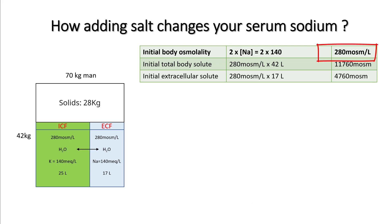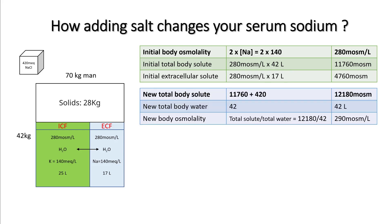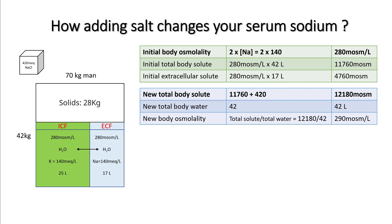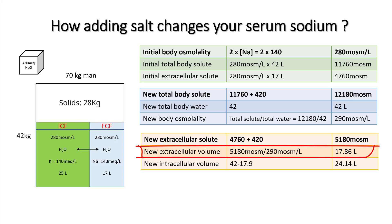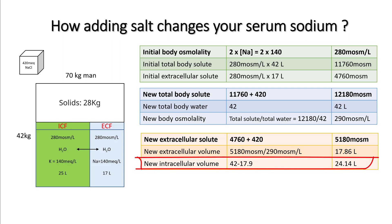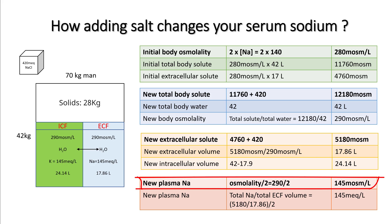Let's do the calculation. We have a total initial body osmolality of 280, so total body solute is 280 × 42 and extracellular solute is 280 × 17. If you add 420 mmol of sodium chloride, your new total body solute is 11,760 + 420, but your total body water has not changed. New body osmolality = total solute ÷ total water = 290. Since sodium is only extracellular, extracellular solute increases to 5,180, giving a new ECF volume of 5,180 ÷ 290 = 17.86. Intracellular volume is 42 − 17.9 = 24.1. Sodium = osmolality ÷ 2 = 145.